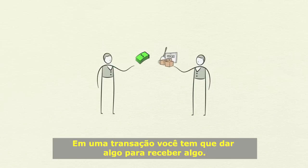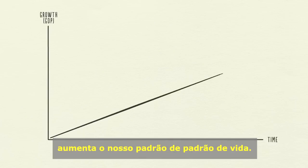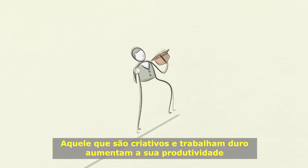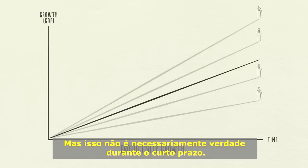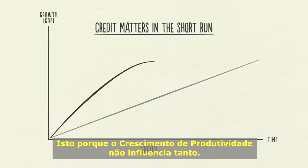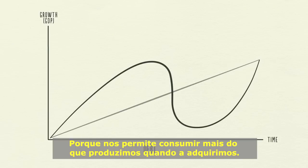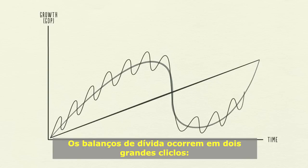In a transaction, you have to give something in order to get something, and how much you get depends on how much you produce. Over time, we learn, and that accumulated knowledge raises our living standards — we call this productivity growth. Productivity matters most in the long run, but credit matters most in the short run, because productivity growth doesn't fluctuate much, so it's not a big driver of economic swings. Debt is, because it allows us to consume more than we produce when we acquire it, and it forces us to consume less than we produce when we pay it back. Debt swings occur in two big cycles.